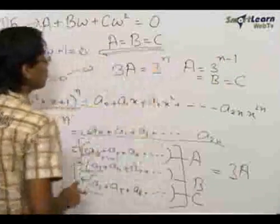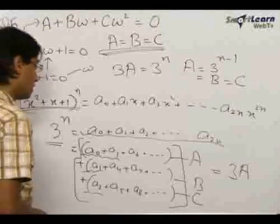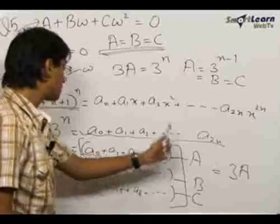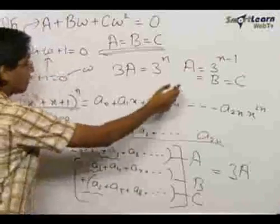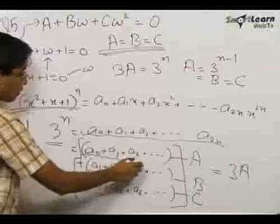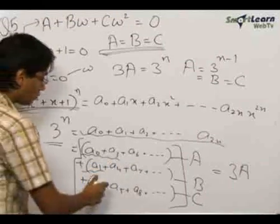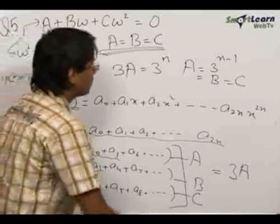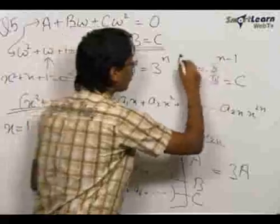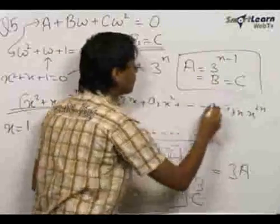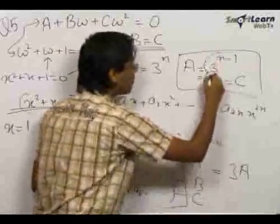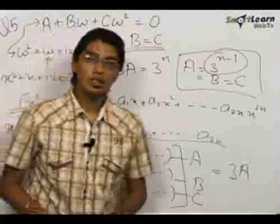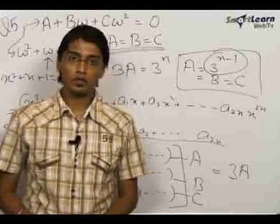Since we proved A = B = C, we have a₀ + a₃ + a₆ + ... = a₁ + a₄ + a₇ + ... = a₂ + a₅ + a₈ + ... All three sums are equal and each has the value 3^(n-1), which was the desired result to be proved.